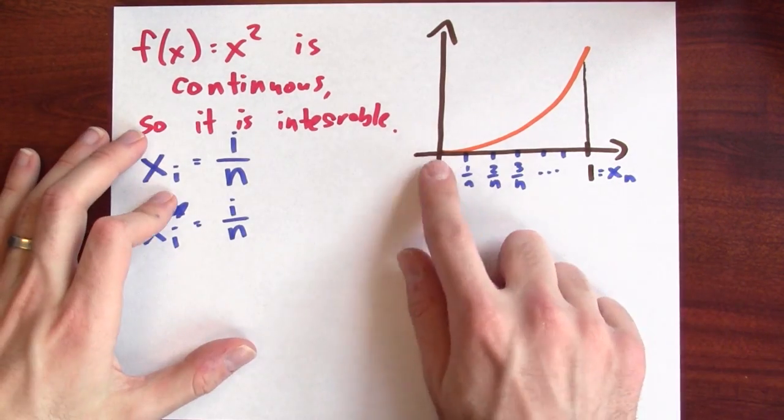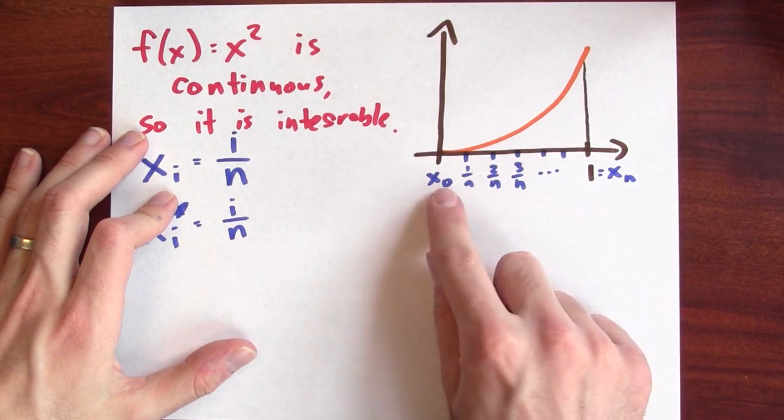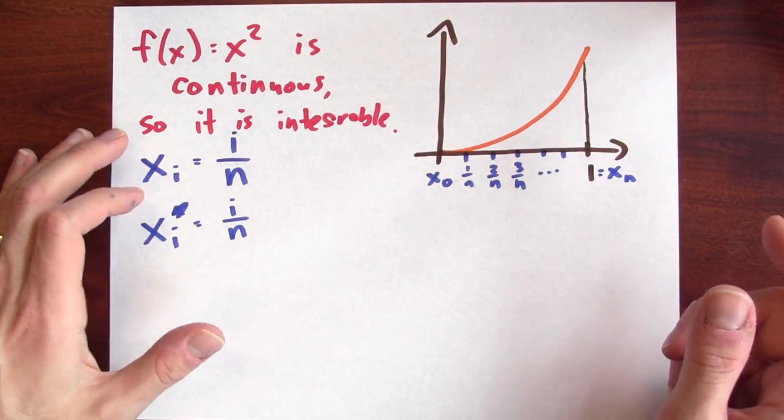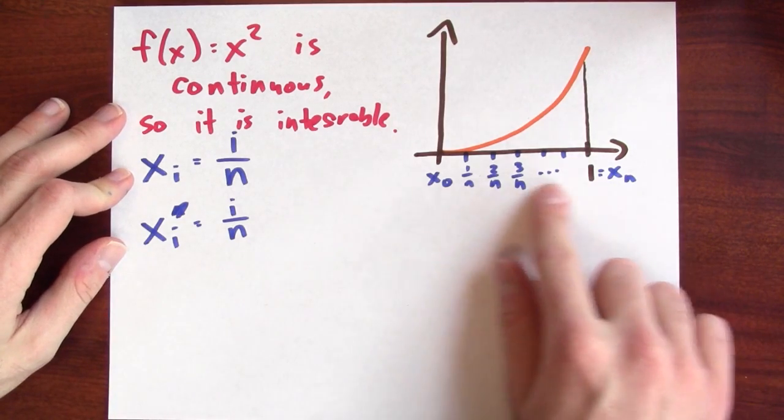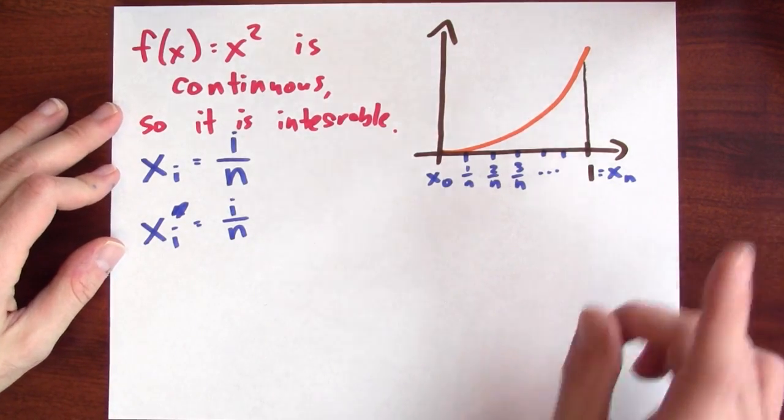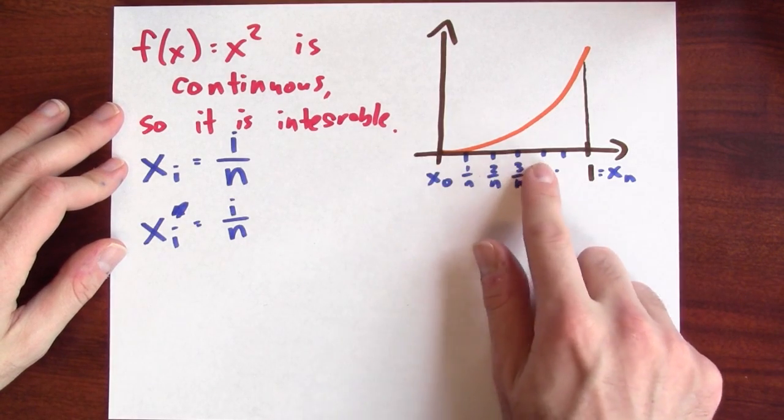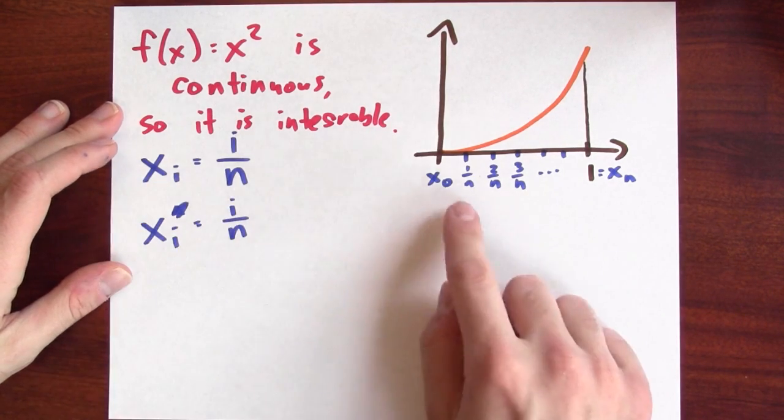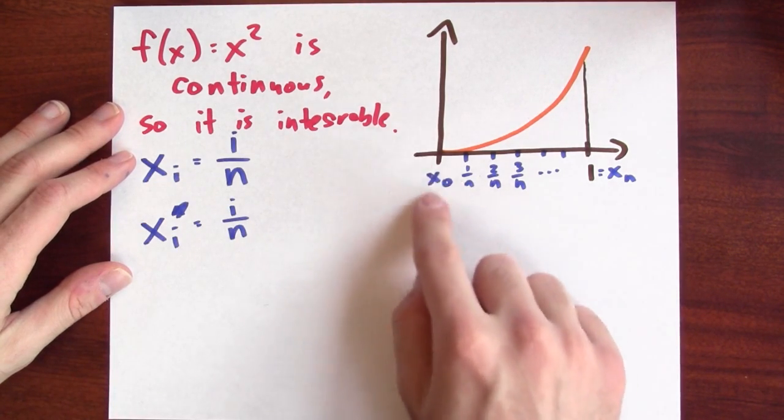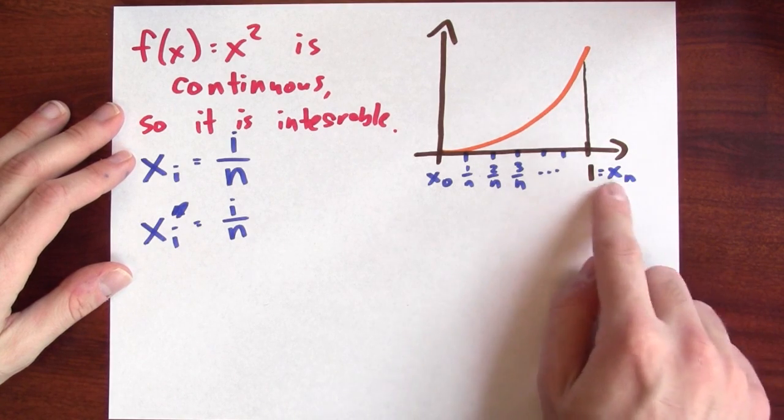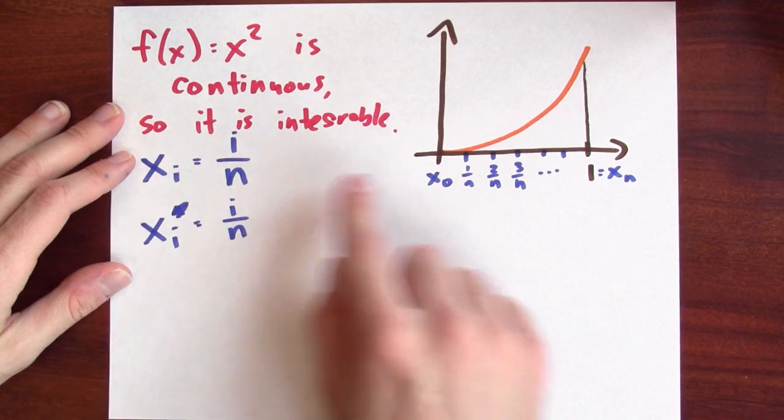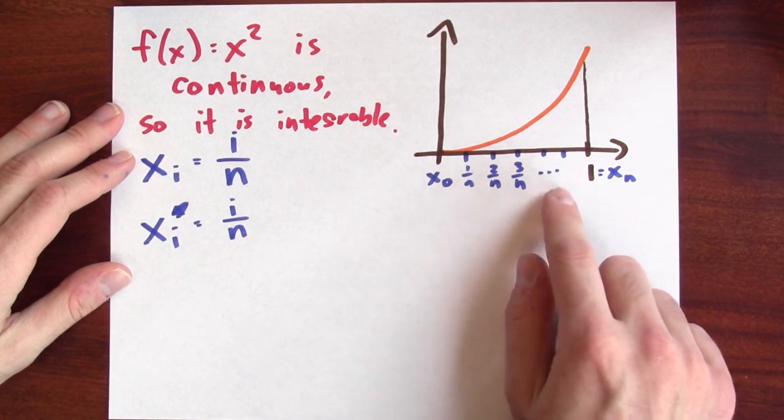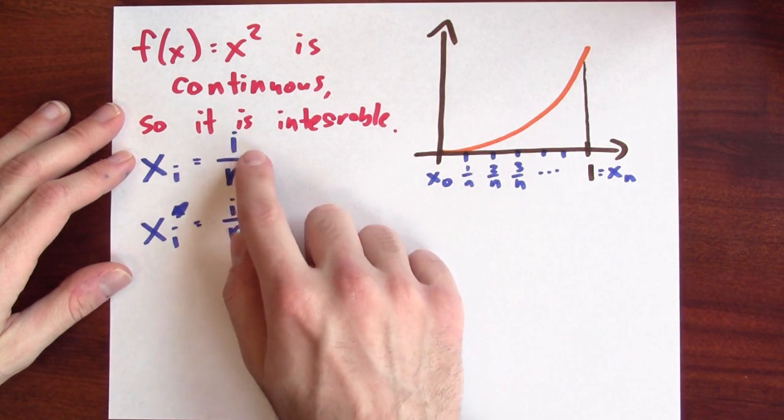I'm going to choose a partition where each of the subintervals has the same width, 1 over n. I'm going to divide the interval into n pieces, each with the same size. I've got to figure out exactly where those cut points are being made, and I'm labeling those points x sub i. So my left-hand endpoint is x sub 0, and my right-hand endpoint is x sub n.